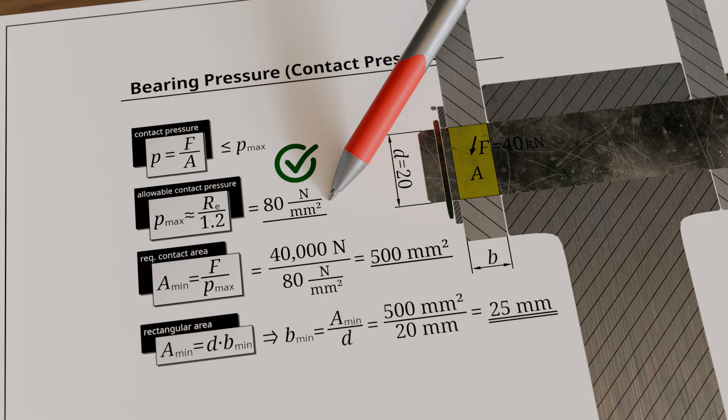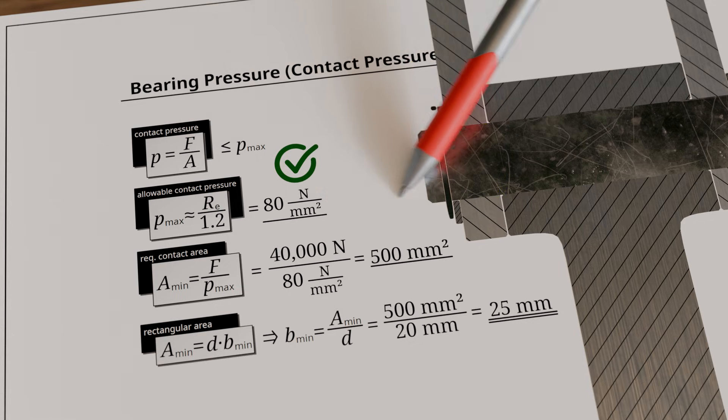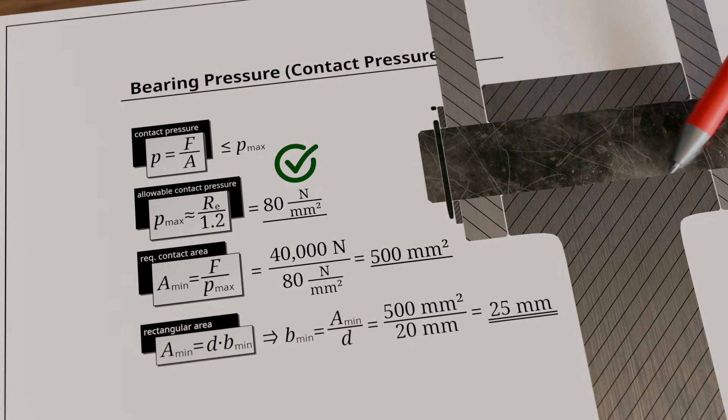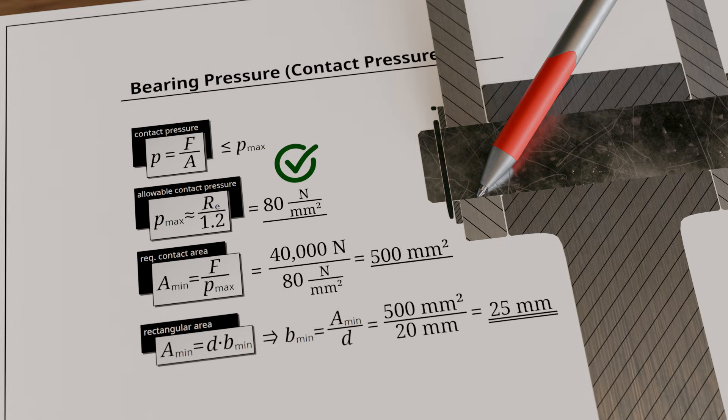Note that we have implicitly assumed that the width of the rod is significantly larger than the width of the clevis arms. This ensures that the highest bearing pressure occurs between the clevis and the pin. Otherwise, it would also be necessary to check whether the allowable bearing pressure is met between the rod and the pin.